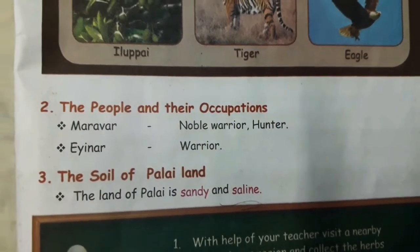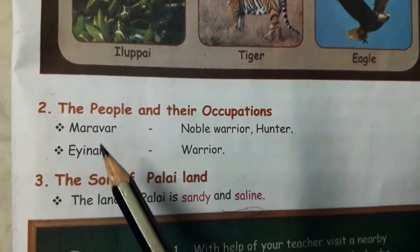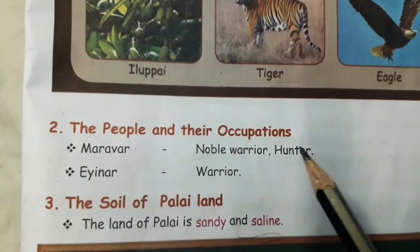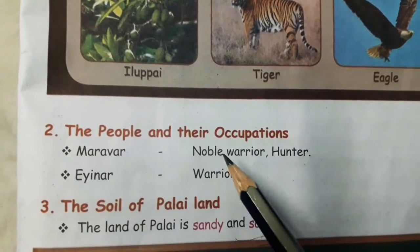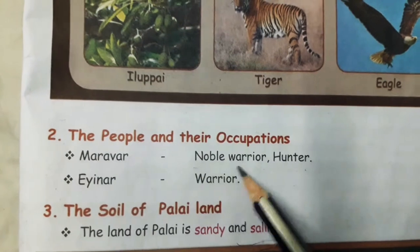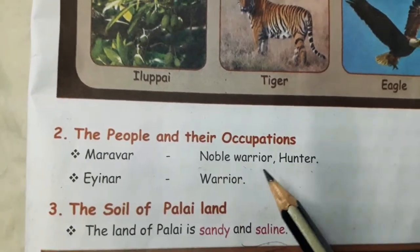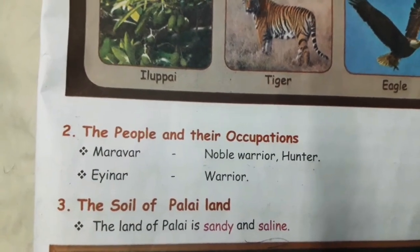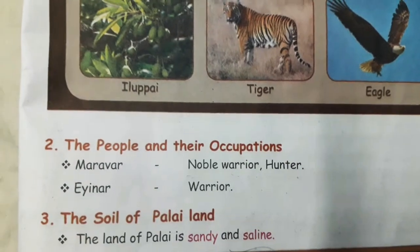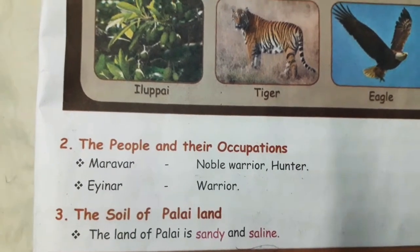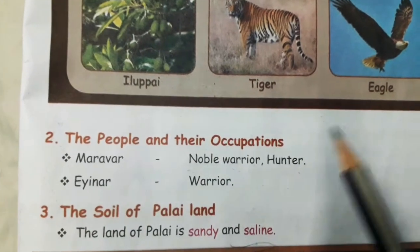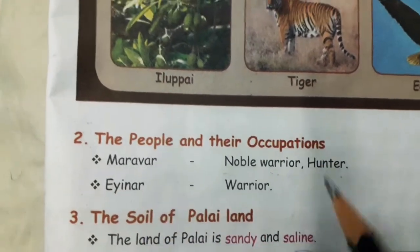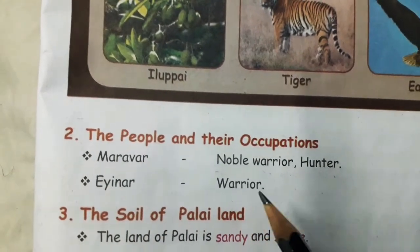Next we will see the Palai land people and their occupations. First, Maravar — their occupation was noble warrior and hunter. Noble warrior means they were super warriors, honored warriors; warrior means soldier or fighter, and they were great and glorious fighters. A hunter is a person who hunts, the huntsman. Second, Einar — their occupation was also warrior; they are soldiers and fighters.